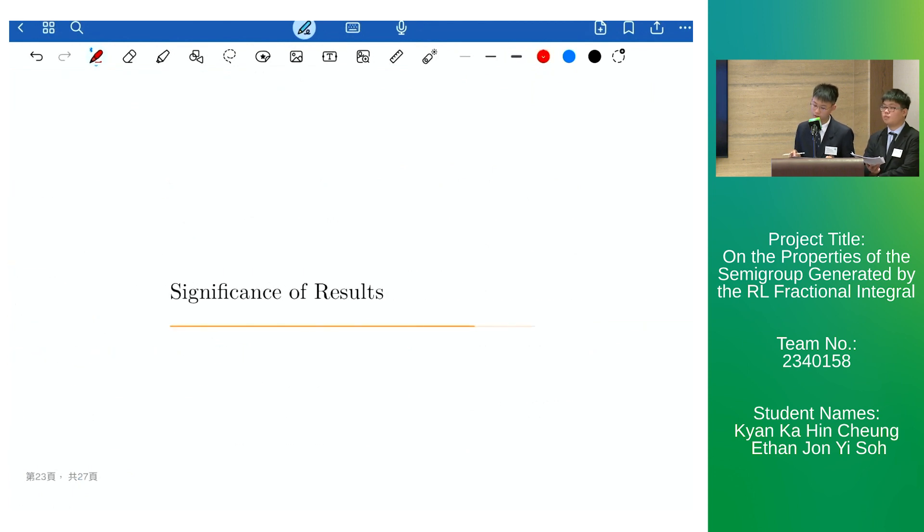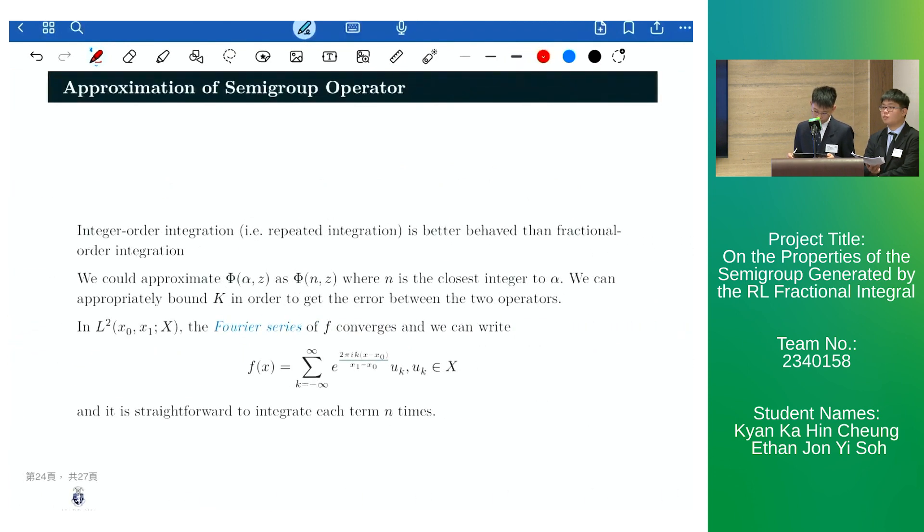We now move on to the significance of our results. Firstly, it's clear that integer order integration is better behaved than fractional order integration. Hence, we could approximate phi of alpha z as phi of n z, whereby n is the closest integer to alpha. We can then use our results on the well-behavedness of phi to determine the error between these two operators.